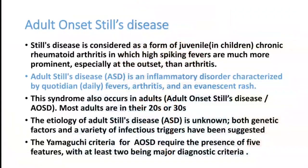Welcome to ATCM, the emergency medicine channel. Today we are discussing Adult Onset Still's Disease. Still's Disease is considered a form of juvenile arthritis — a chronic rheumatoid arthritis-type disease characterized by arthritis, spiking fevers, and rashes all over the body.